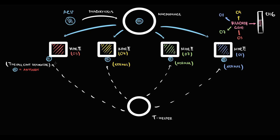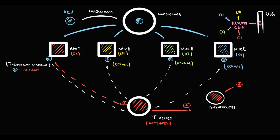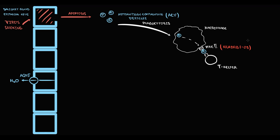In response to any antigen, T helpers immediately become activated, and subsequently they activate B lymphocytes that begin to produce antibodies, and they also activate T killers. So in individuals with the HLA-DRB1-03 allele, the MHC2 receptor presents vesicles in an abnormal way. Because of this, T helpers recognize the autoantigen-containing vesicle as a foreign antigen, and in response, T helpers become activated.